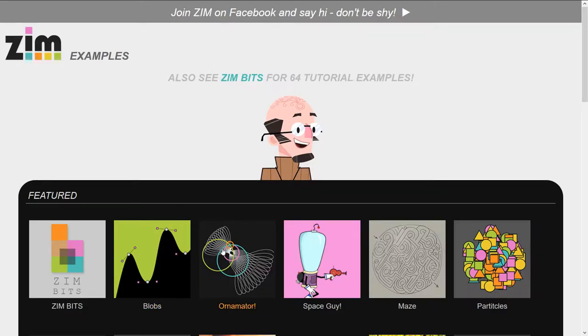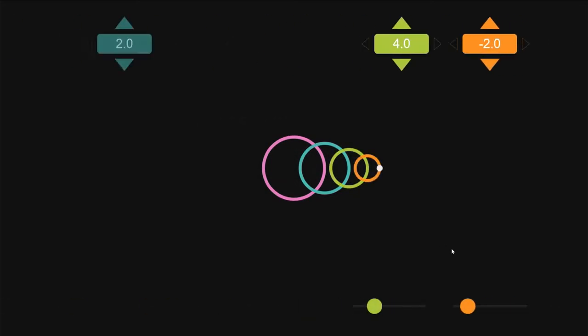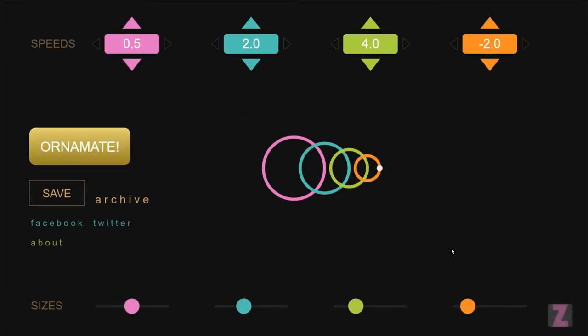And here we've got the Ornimator, the third example. This was a holiday creation, and note the animation in whoosh whoosh whoosh. It's very easy to animate with Zim.